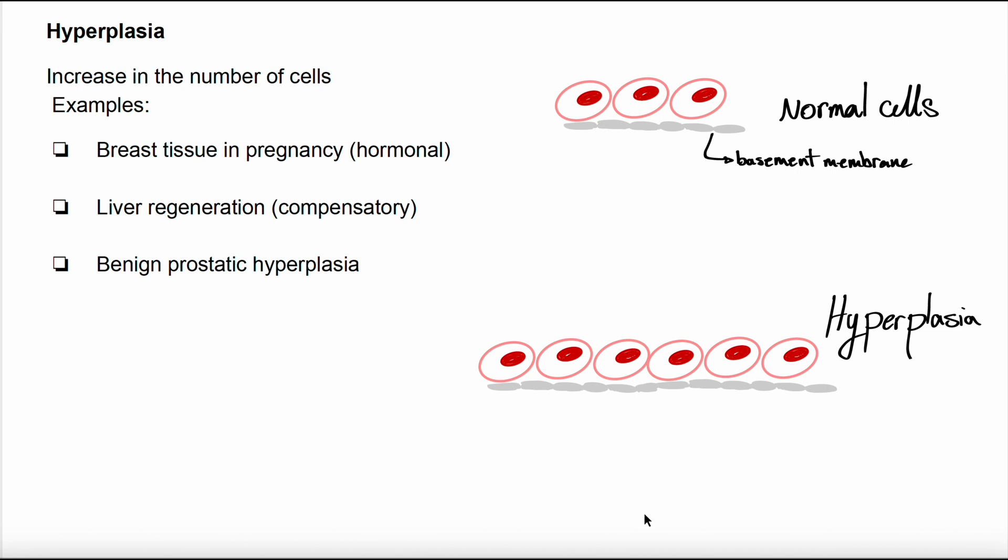Another example for pathological hyperplasia can be psoriasis, which is an autoimmune disease because of tenfold increase of epidermal cell proliferation.